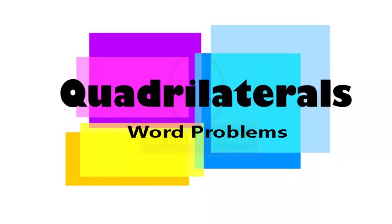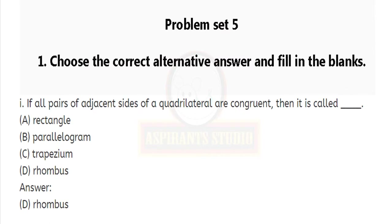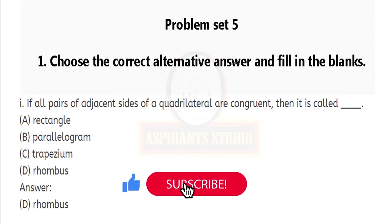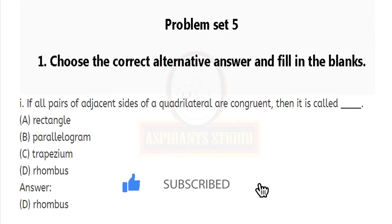Quadrilaterals word problems. Problem set 5: Choose the correct alternative answer and fill in the blanks. If all pairs of adjacent sides of a quadrilateral are congruent, then it is called dash. Out of the given options — rectangle, parallelogram, trapezium, and rhombus — the correct answer is rhombus.